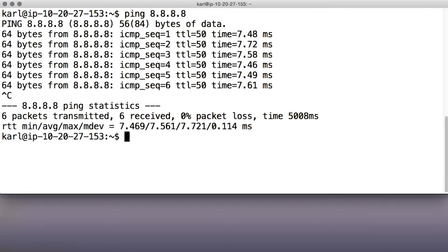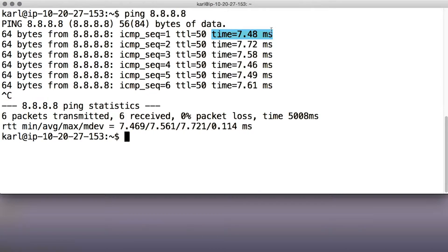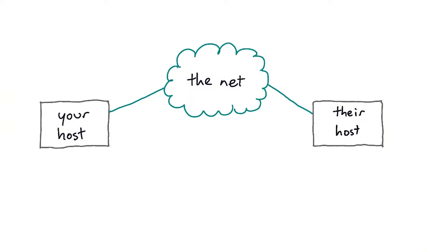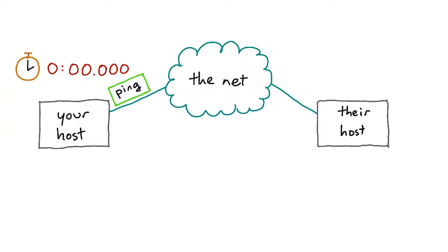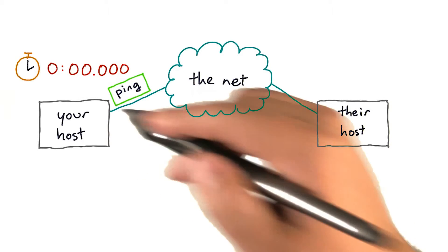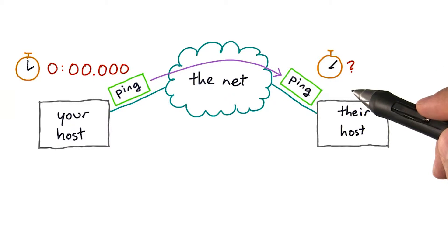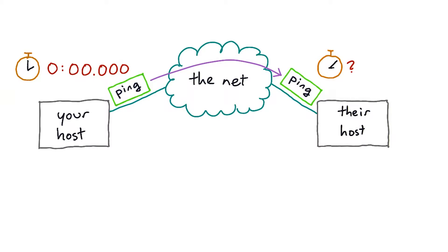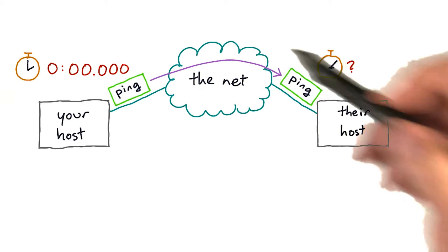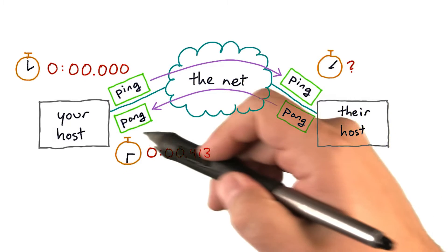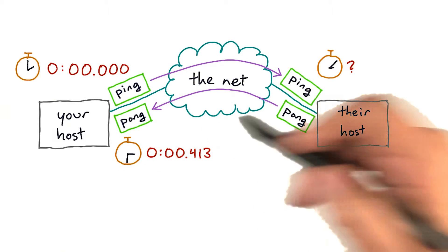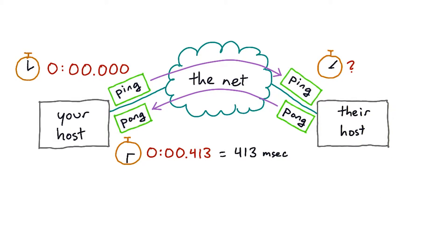When you've used ping, it's given you numbers for the round trip time between you and the machine you're pinging. But what exactly is a round trip time? It's pretty much what it sounds like. Your machine can't tell how long it takes for a packet to get from it to the other end, but it can tell how much time has elapsed between when it sent that packet and when it received a response. That's the round trip involved.